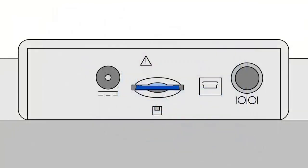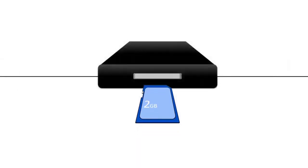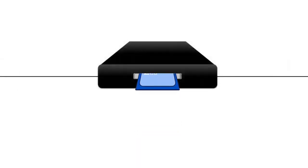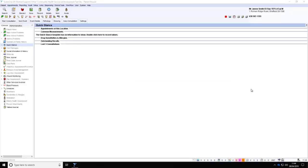To send the ECG file to the patient record system, eject the memory card located on the back of the machine by pressing in the card and allowing it to pop out. The memory card can now be placed into the card reader connected to the PC running the patient record system. Once connected, ensure that you have the correct patient open within System 1.